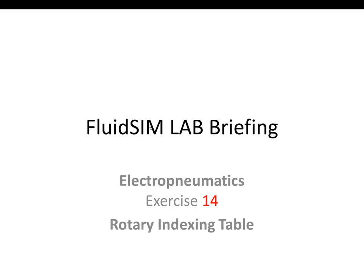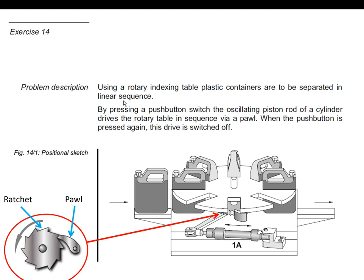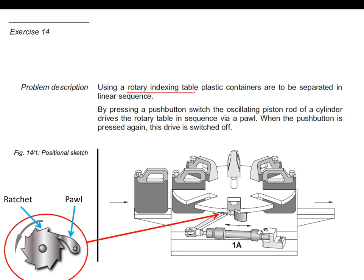Assalamualaikum and hello everyone. In this tutorial video we are going to look at the solution of a rotary indexing table from an electronic perspective. The problem description reads: using a rotary indexing table, plastic containers are to be separated in a linear sequence. The table is called rotary because it rotates, and indexing because it has many slots that move one step at a time.